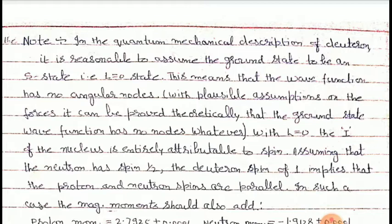In the quantum mechanical description of the deuteron, we assume the ground state to be an S state, that is L equal to zero. This means that the wave function has no angular nodes. With L equal to zero, the total angular momentum I of the nucleus is entirely due to spin, because I is equal to L plus S, and since L equals zero, I will be equal to S.